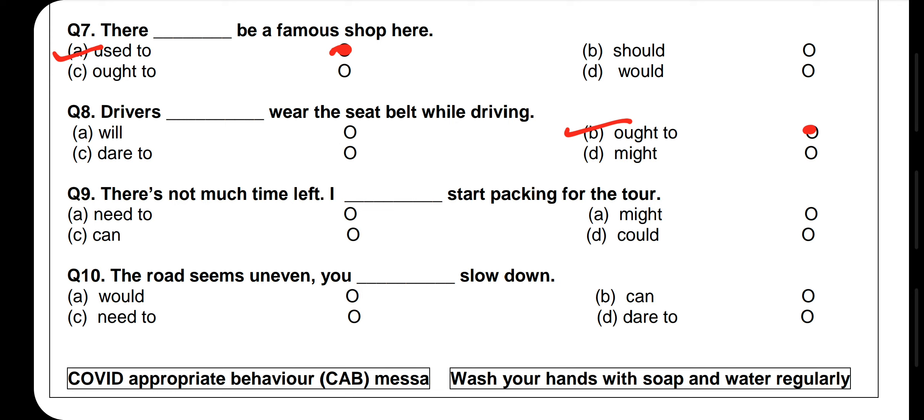Question 9: 'There isn't much time left, I just ___ start packing for the tour.' 'Need to' shows necessity, 'can' shows ability, 'might' shows possibility, and 'could' is past of can. Since there is little time left and packing must begin, 'need to' is correct here. Question 10: 'The road signs show the roads are uneven, you ___ slow down.' 'Dare to' expresses courage, but the correct answer is 'need to' because of the necessity of slowing down on an uneven road.